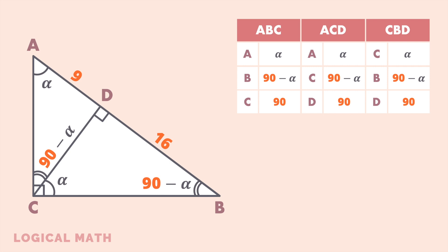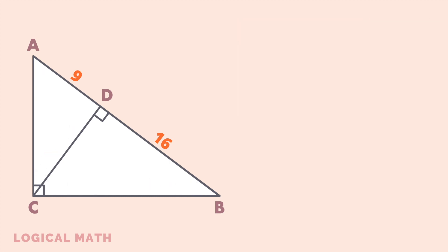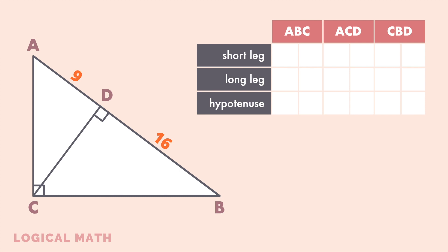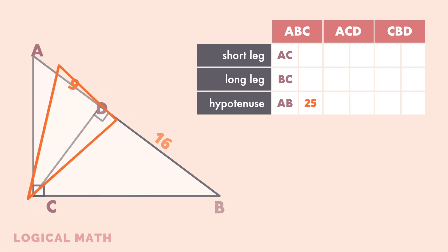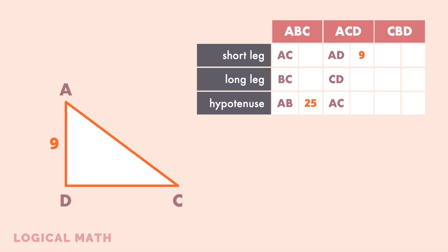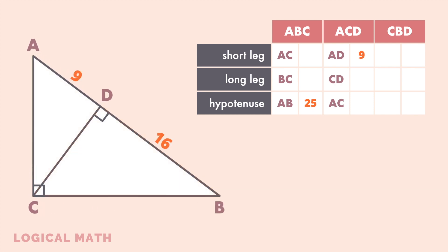Before moving further, let's fill in the table with information we already know about the sides of the triangles. In the large triangle ABC, the short leg is AC, the long leg is BC, and the hypotenuse is AB with a length of 25. In the same way, we fill in the data for triangles ACD and CBD.